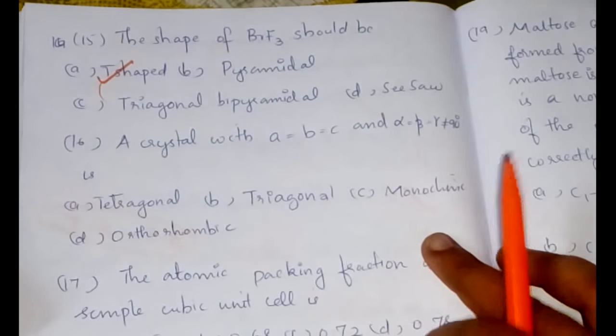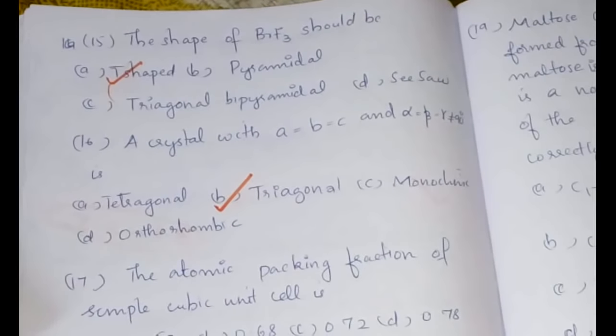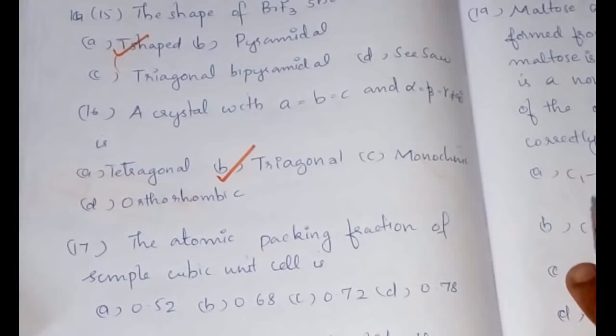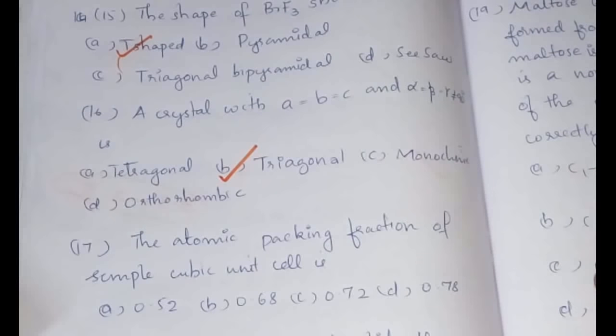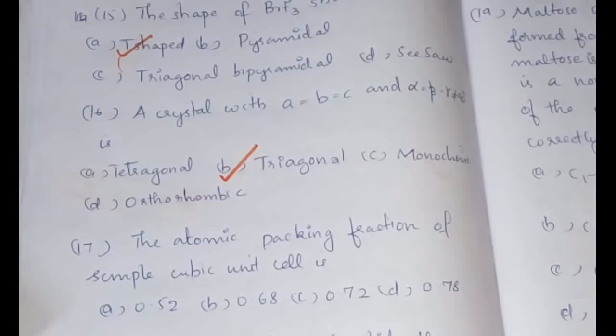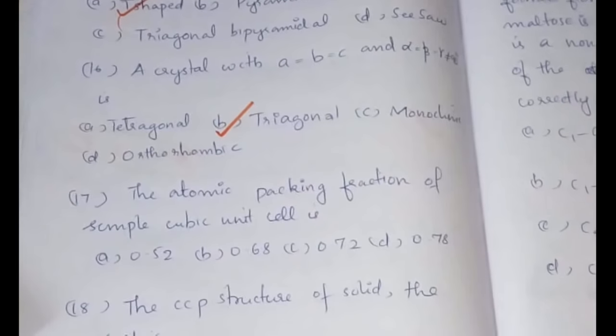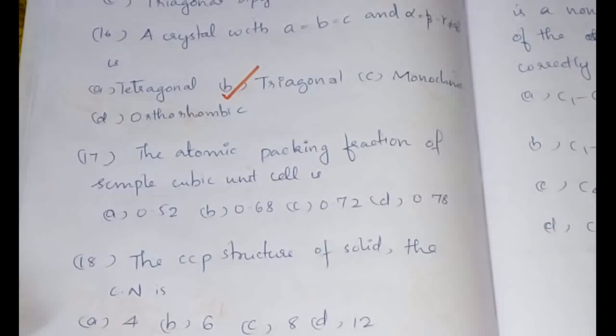This is another direct question. The 16th one is another direct question: a crystal with a=b=c and alpha=beta=gamma but not equal to 90 degrees—this is trigonal. Again, I have taken this in the part of solid state, and I have even given you a shortcut to remember the 14 Bravais lattices and also their connections between their axial angles and edge lengths, which is very important. I hope you have all written this answer.